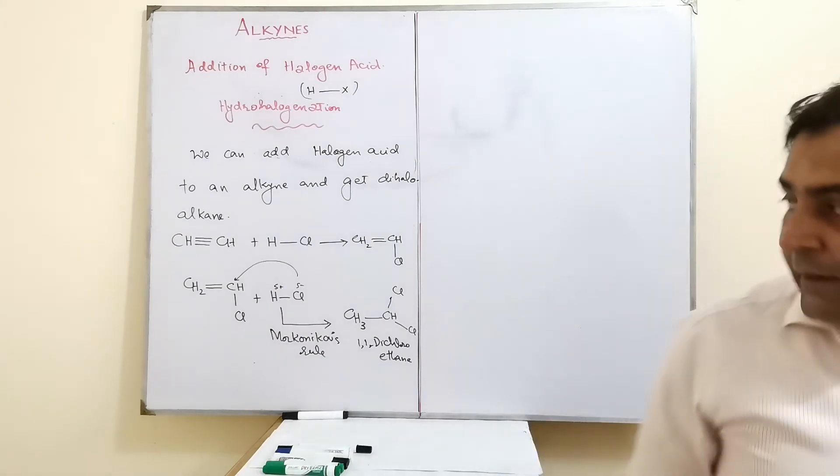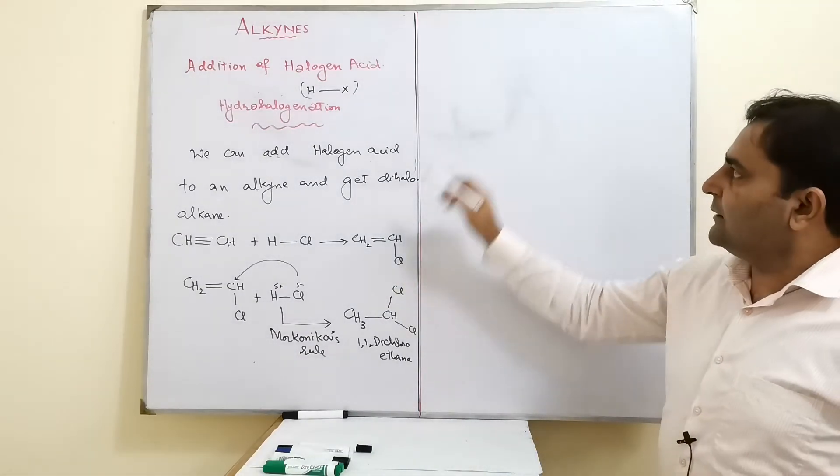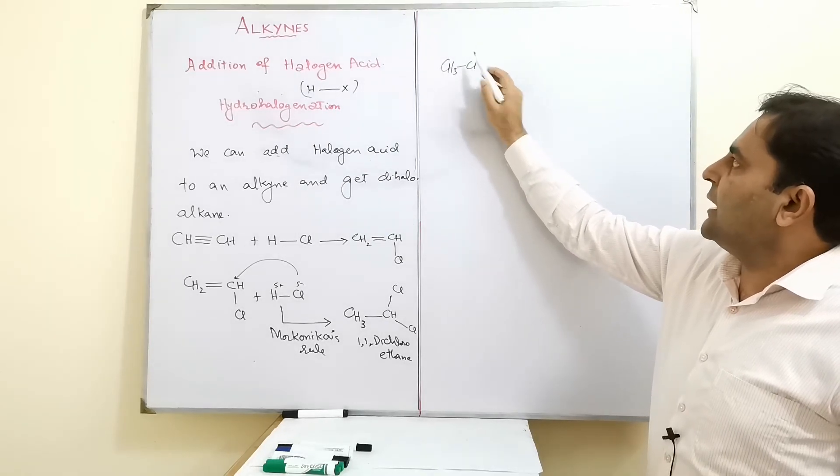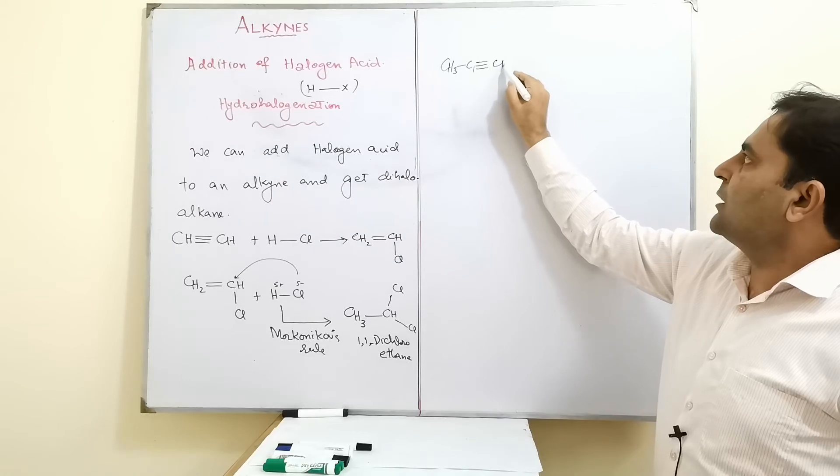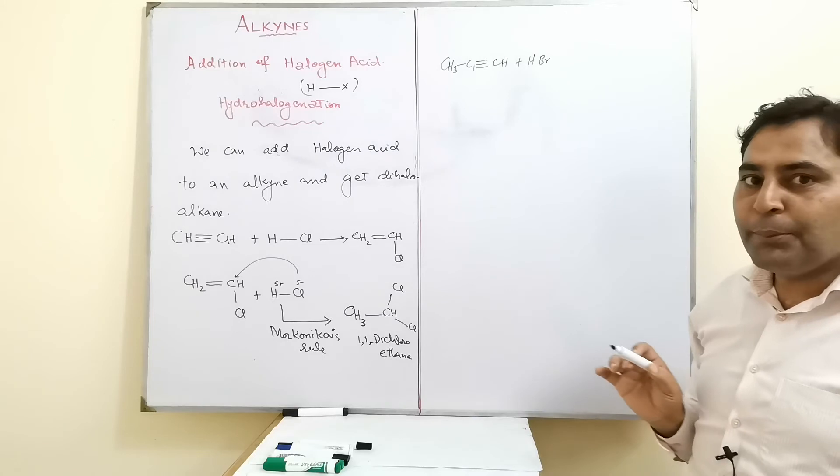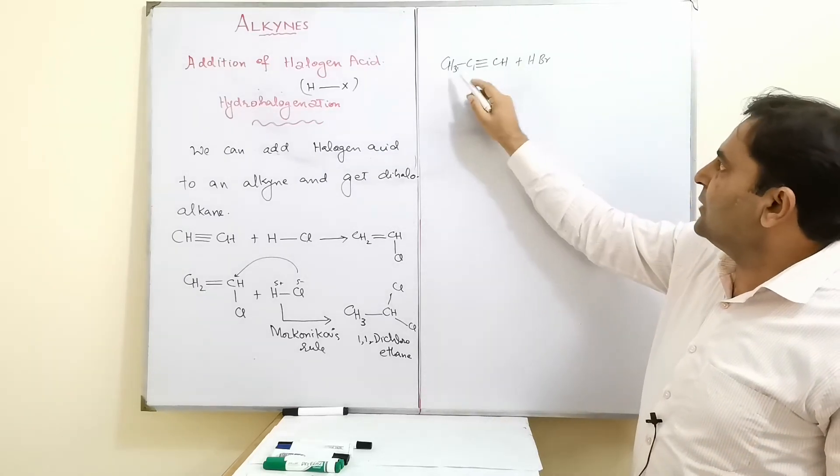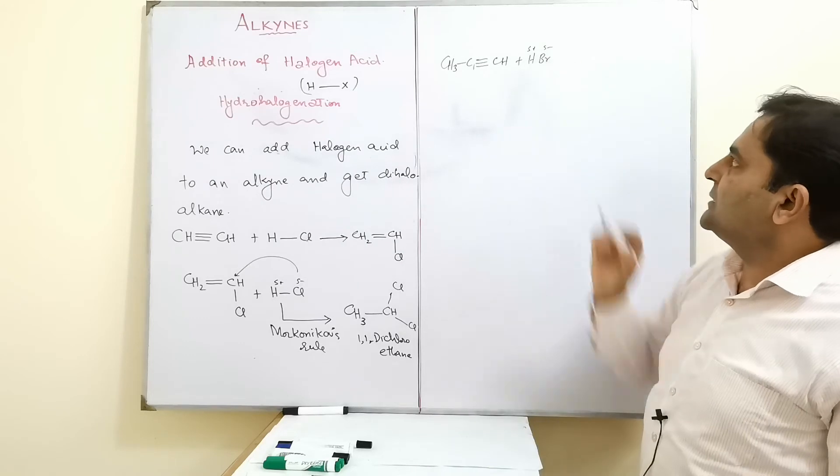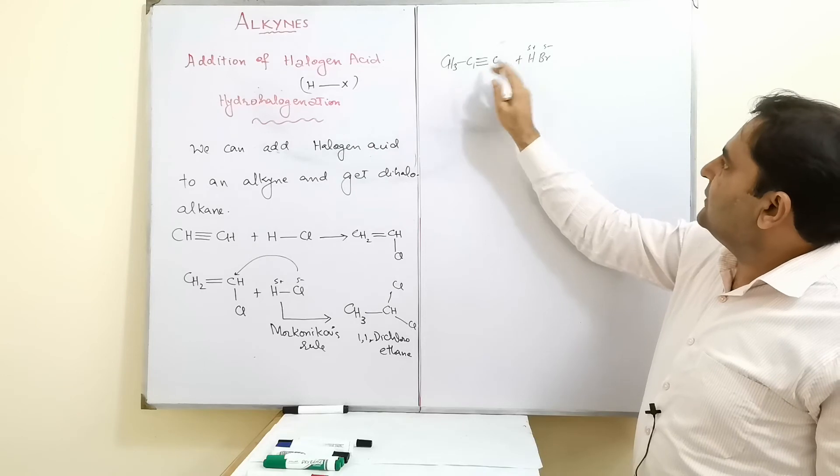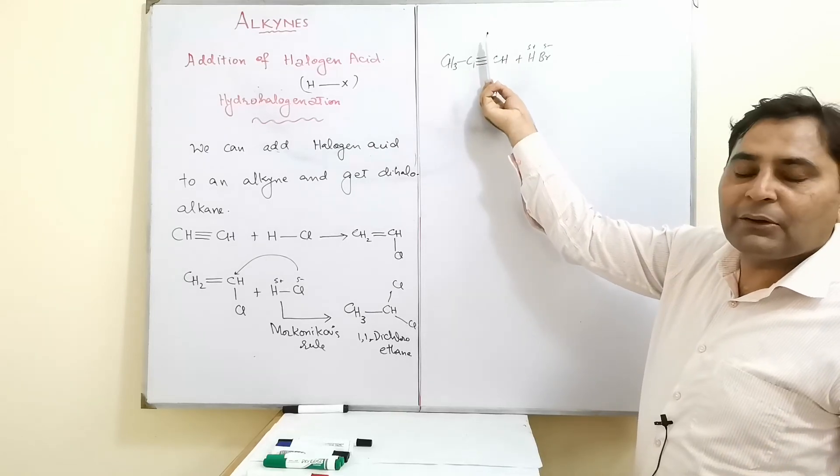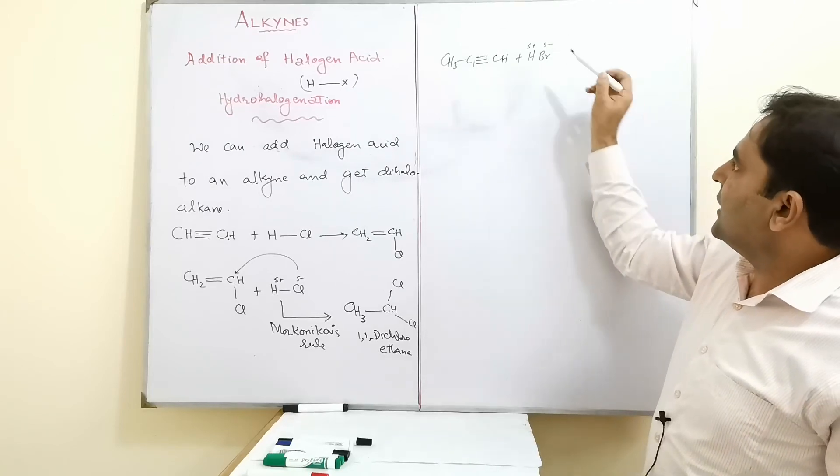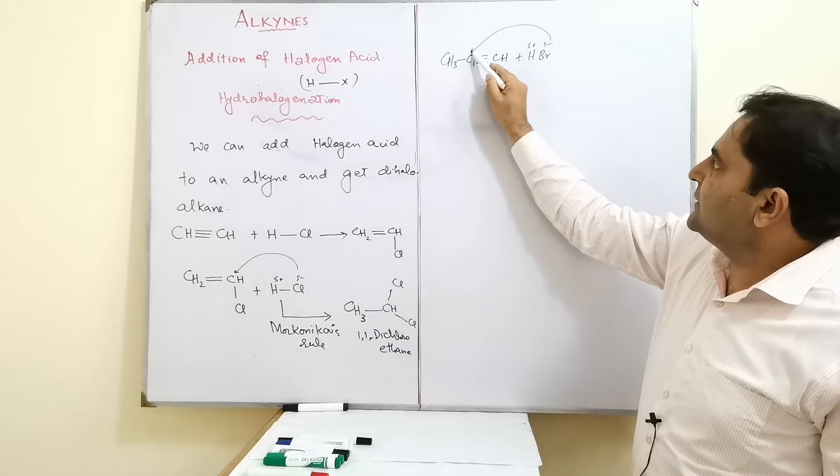Similarly, if you have propyne and add halogen acid to it, let me take HBr. Now we are not free even on the first addition. Look, this is unsymmetrical - if you bisect it, it divides into unequal halves. So we follow Markovnikov's rule on the first step itself.